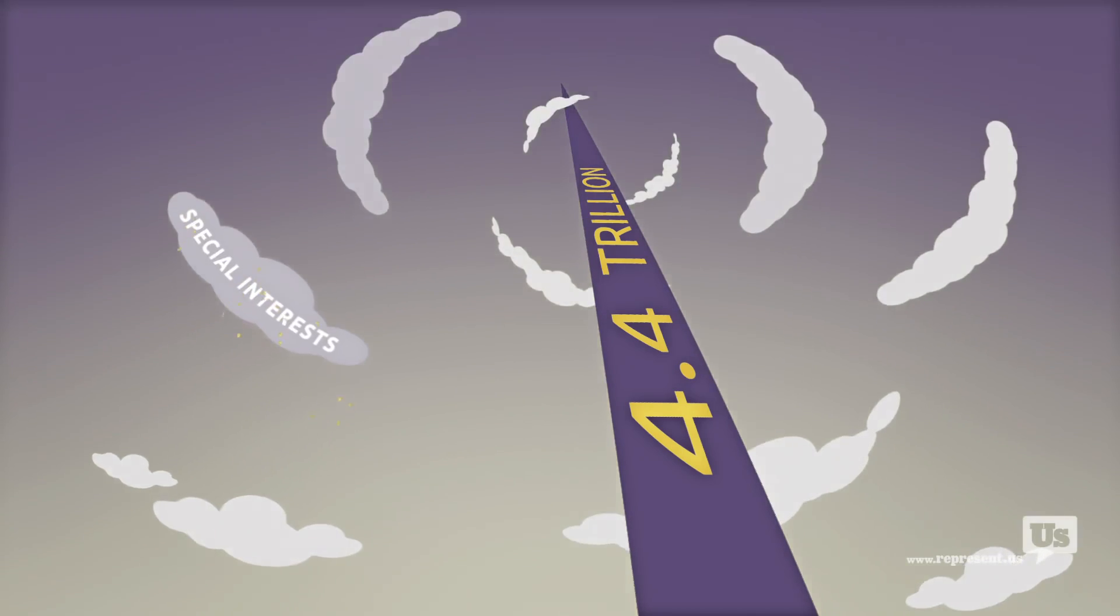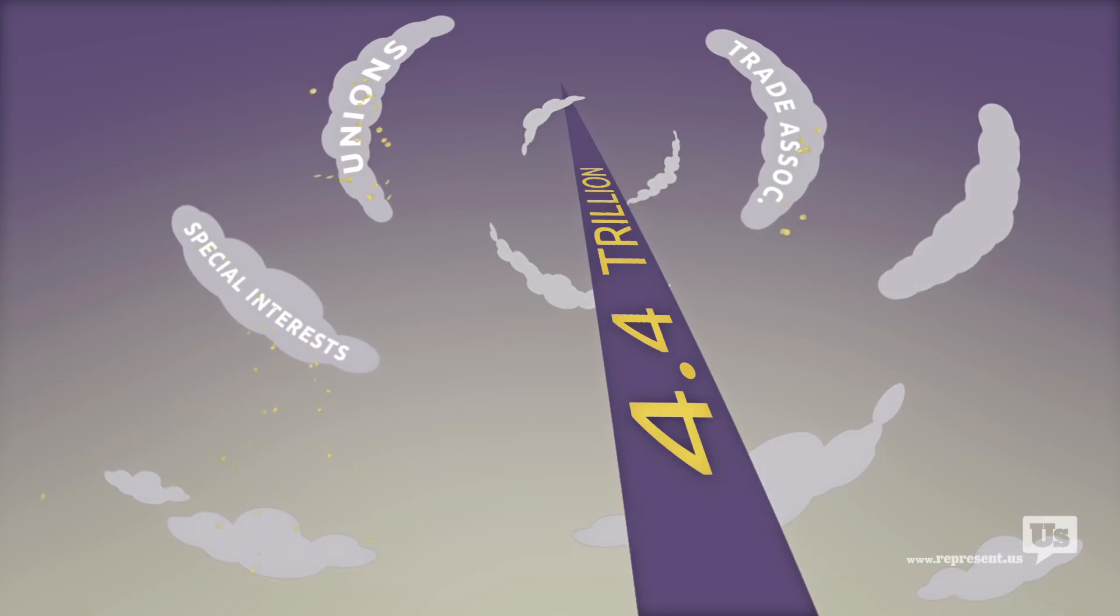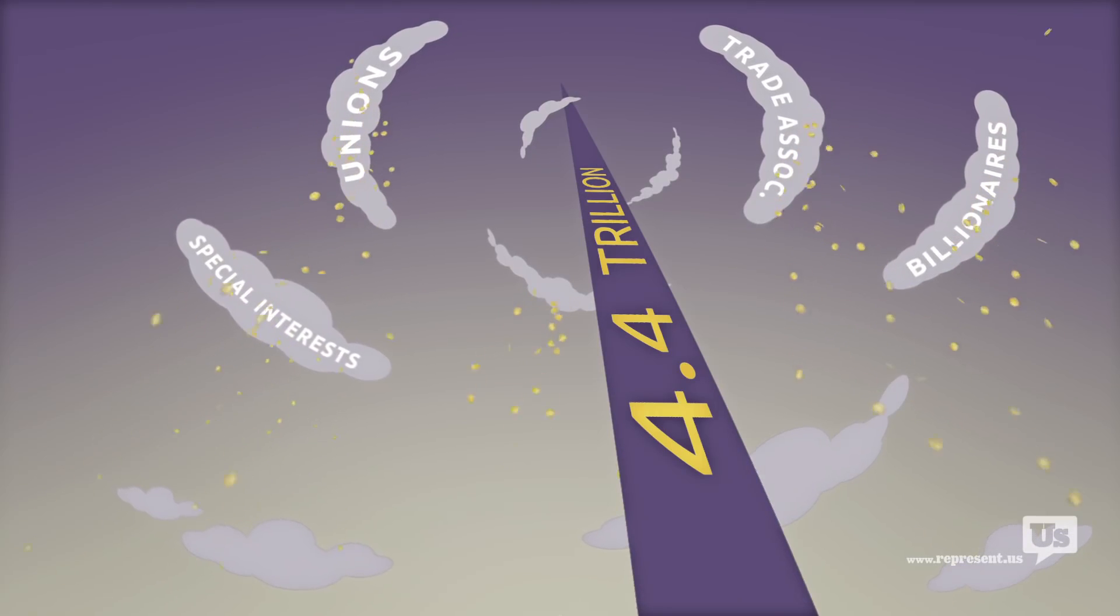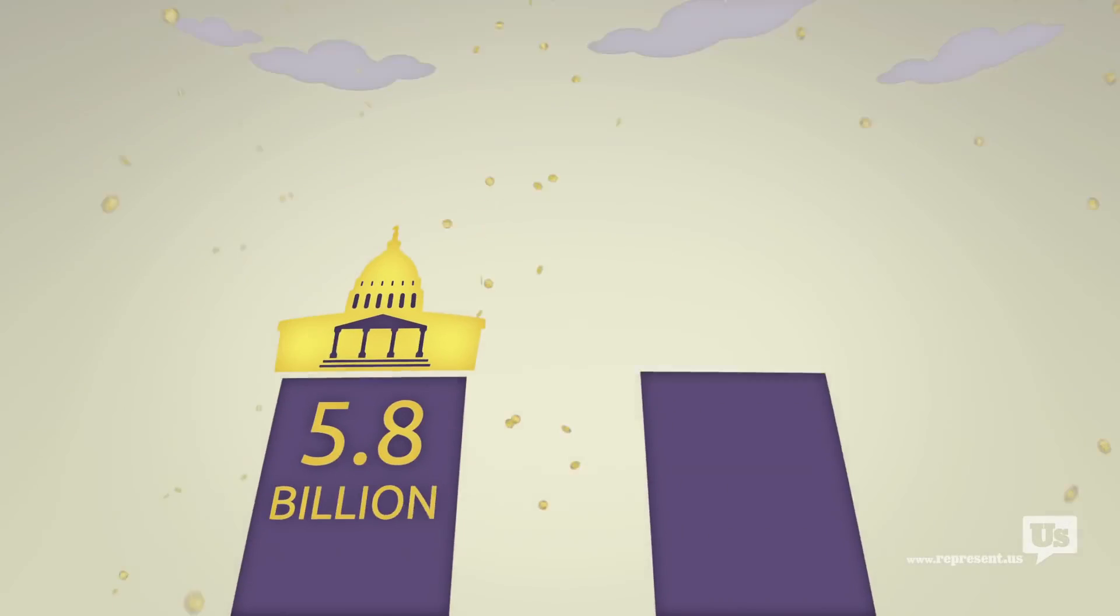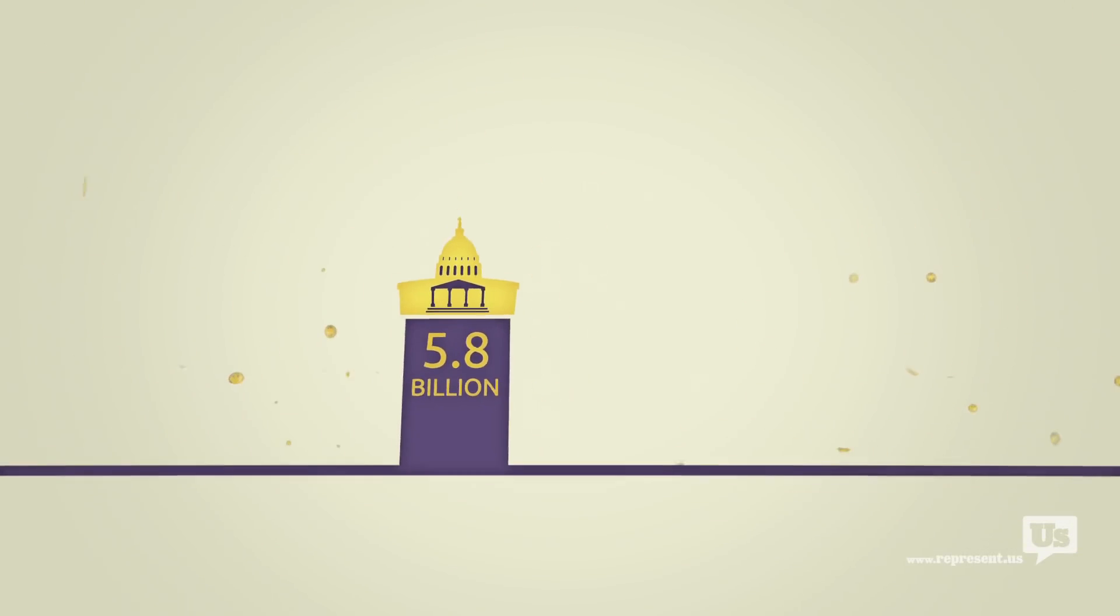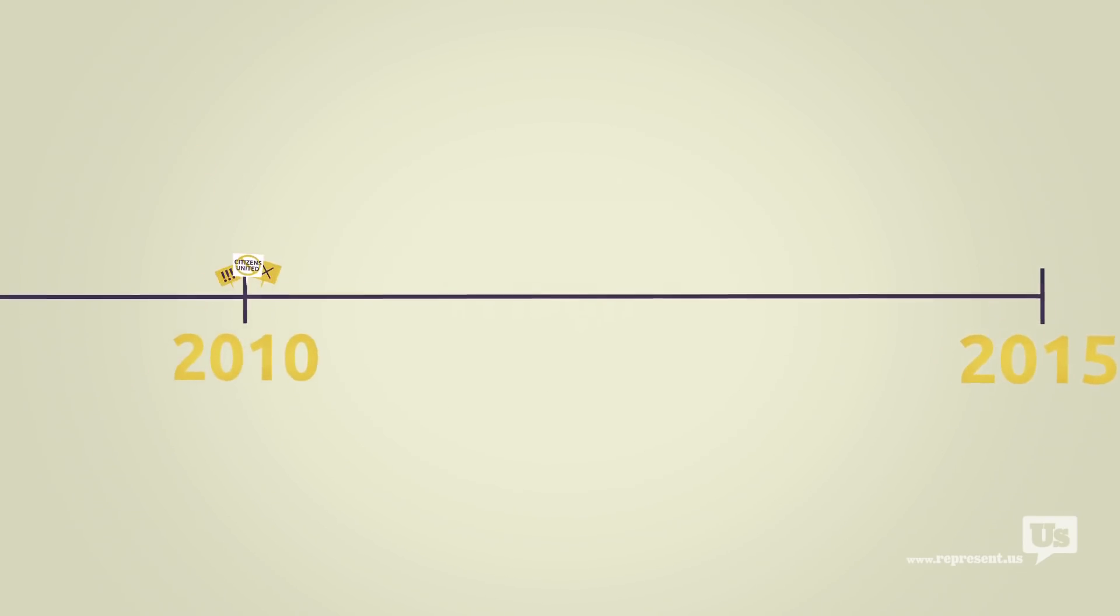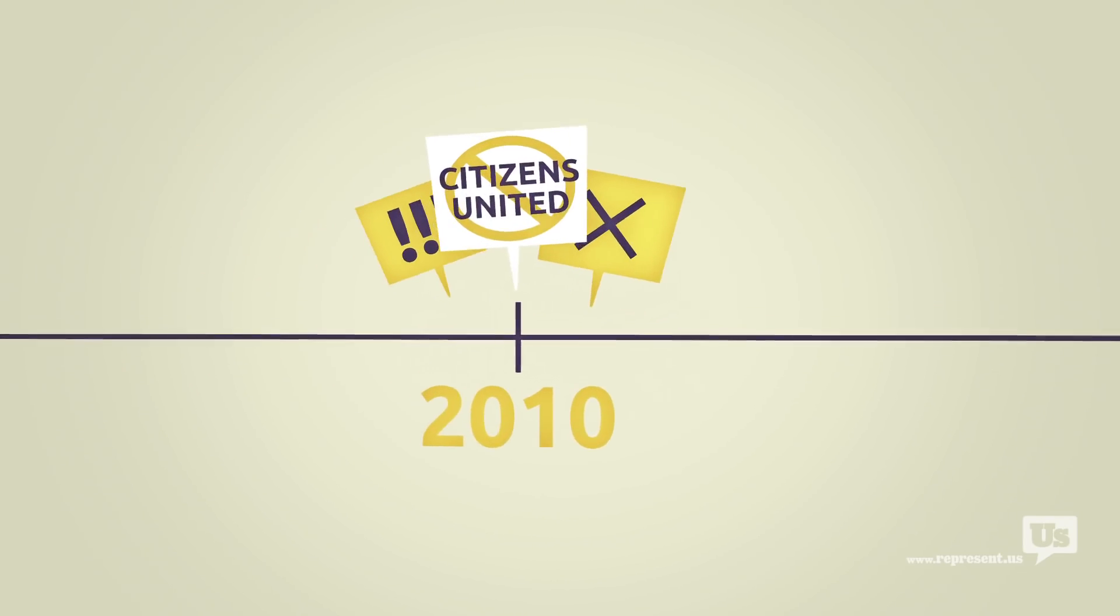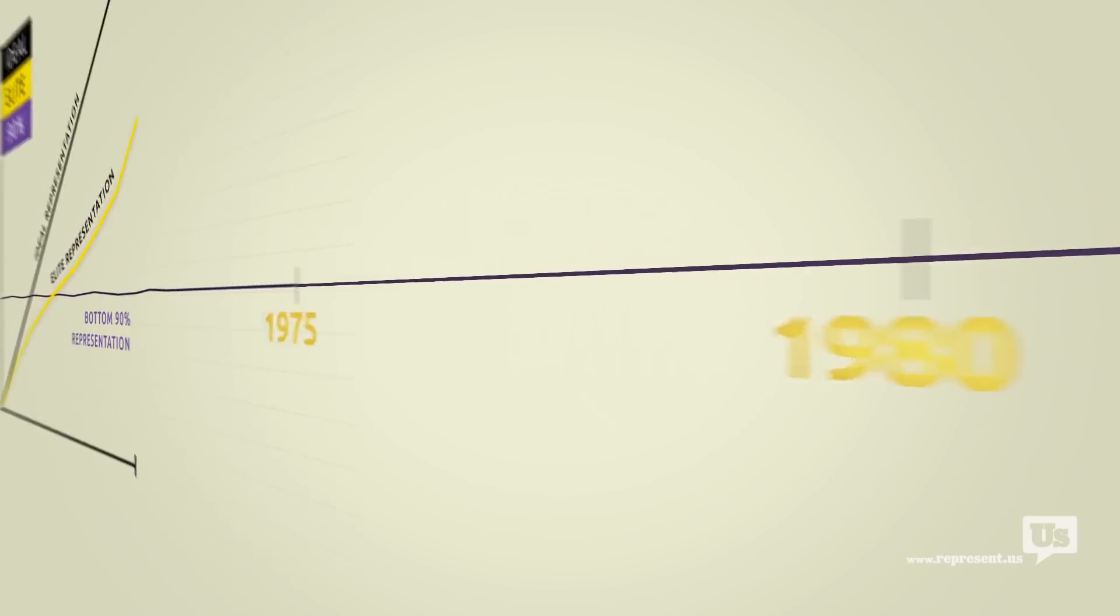Never mind every other special interest, every union, every trade association, and every billionaire. Every single one of them can use their money to buy political influence. You know, there's this idea out there that this only became a problem after the Supreme Court's Citizens United decision in 2010. But the data goes back almost 40 years, and the results are clear.